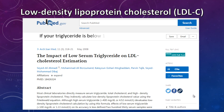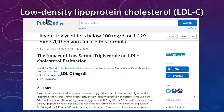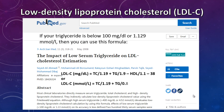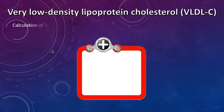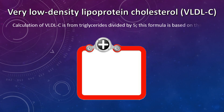If your triglyceride is below 100 mg/dL (1.129 mmol/L), then you can use this alternative formula: LDL-C (mg/dL) = TC ÷ 1.19 + Triglyceride ÷ 1.9 − HDL ÷ 1.1 − 38. Very low density lipoprotein cholesterol (VLDL-C) is calculated as: VLDL-C = Triglyceride ÷ 5, based on the typical composition of the VLDL particle.